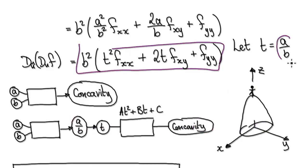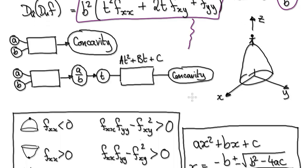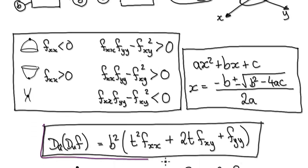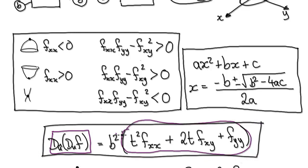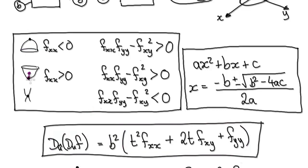Remember, this is always positive. So we are looking at the concavity. If the concavity is always negative, then you know you're at the top — you're at a local max, because the concavity is always bending down. If the concavity is always positive, you know you're at a local minimum.